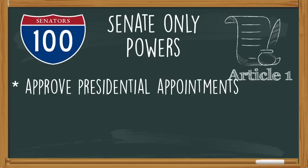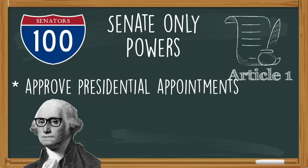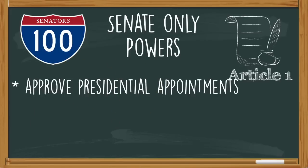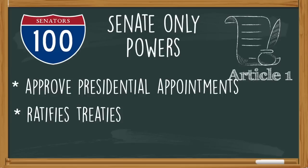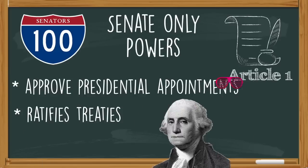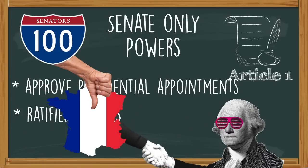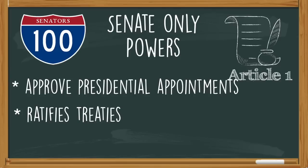In the Senate they can approve presidential appointments. So when the president of the United States is choosing people to work in his executive branch, the Senate has the power to approve or deny those appointments — they can ask the president to choose someone else. Senators can also ratify presidential treaties with other nations by approving them, or they can deny them and say we don't like this one — it's not what's best for America.